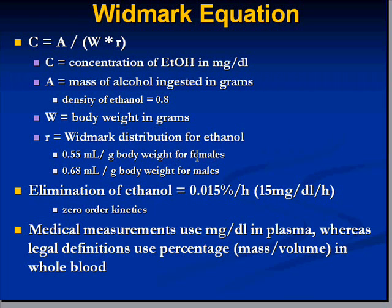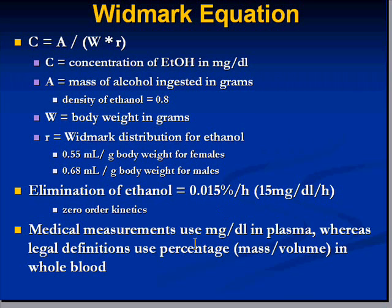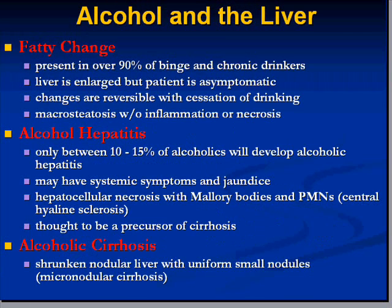BAC is inversely proportional to your body weight times a constant. That constant differs slightly between males and females because of differences in how men and women metabolize alcohol. A commonly asked question is how long you must wait for alcohol levels to drop. You drop your blood alcohol level about 0.15 percent per hour — roughly one drink per hour — so that's the easiest general principle to remember.